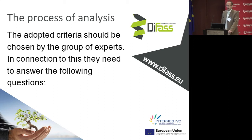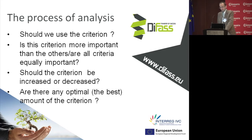The adapted criteria should be chosen by the group of experts — and you are the experts. In connection with this, they need to answer the following questions: Should we use this criteria? Is this criteria more important than the others, or are all criteria equally important? Of course, it would be easier for us to make the analysis. Should the criteria be increased or decreased? And lastly, is there an optimal amount of criteria?